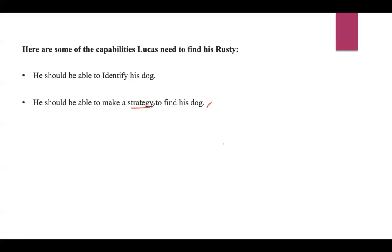What kind of strategy should be applied here? First, he should search in his home. If he doesn't find him there, then search in the play area where they usually go with the dog. If he still doesn't find him, then he should ask his friends, and so on. These are some kinds of strategies that he can apply. He should also be able to act according to the situation — say if it's raining and he knows his dog does not prefer to get wet, he'll focus his search on sheltered places.